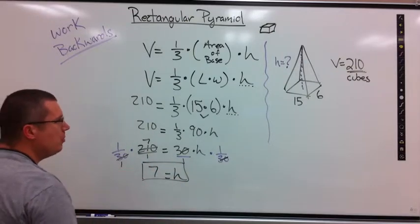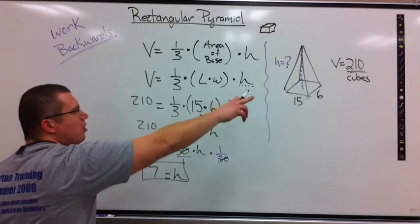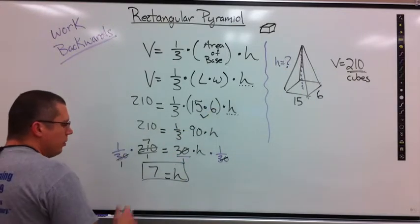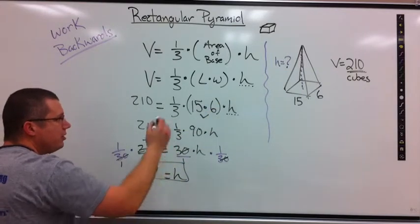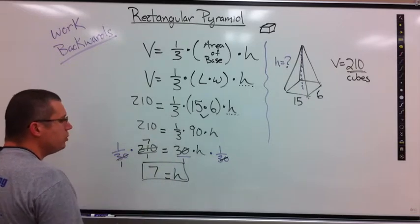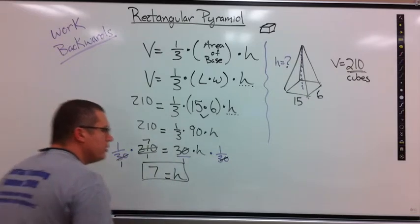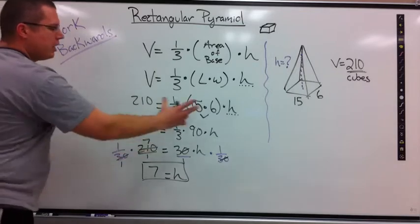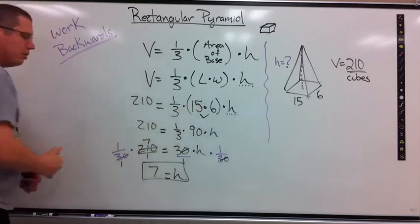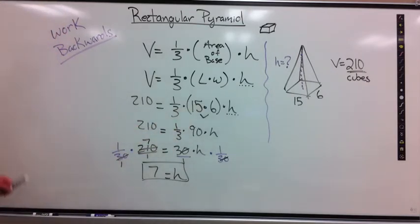My label is not cubes because I already know my volume is 210 cubes. What I'm trying to figure out is how tall is this object. So my answer should be 7. 7 tall. Working backwards. Combine first. Get rid of any multiplied numbers that are there. That's it.